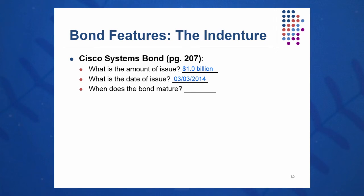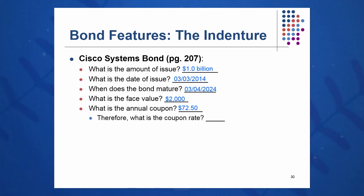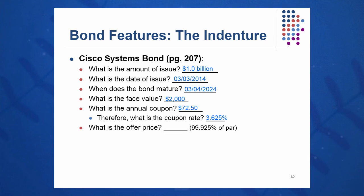What's the date of the issue? 3-3-2014. When does the bond mature? It matures on 3-4-24, making it about a 10-year bond. What's the face value? Two thousand dollars — most corporate bonds are one thousand dollars, but this one's a little different. What's the annual coupon in dollars? Seventy-two dollars and fifty cents. Therefore, we can calculate the coupon rate by taking the annual coupon divided by the face value, giving us 3.625% as the coupon rate — the rate of return on this bond.